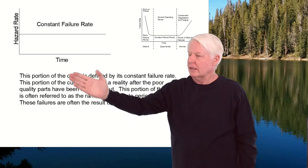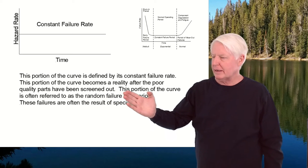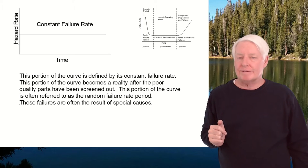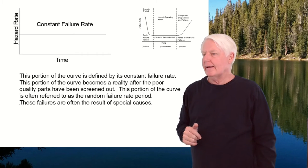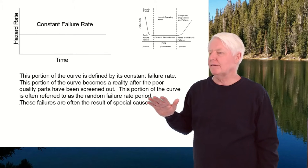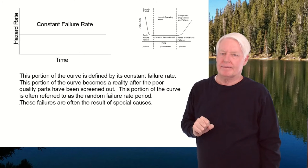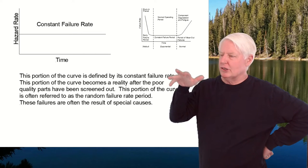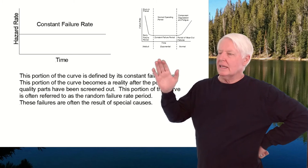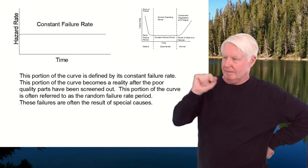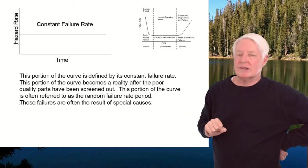The middle section is identified by its constant failure rate. This portion becomes a reality after the poor quality parts have been screened out, and it's often referred to as the random failure rate period or constant failure rate period. These failures are often the result of special causes. For example, an airplane flying through the air — its probability of getting hit by a bird is equal during this whole time, because the bird doesn't care if it's an old or newer engine. The probability of failure is constant. We use the exponential distribution for this section.